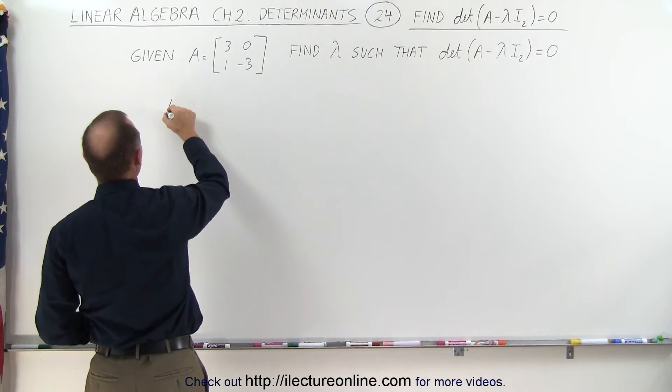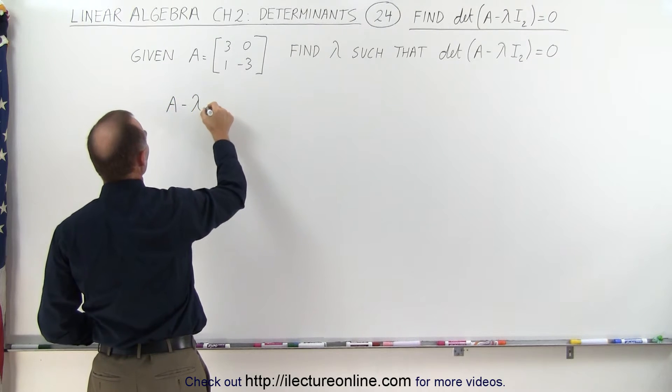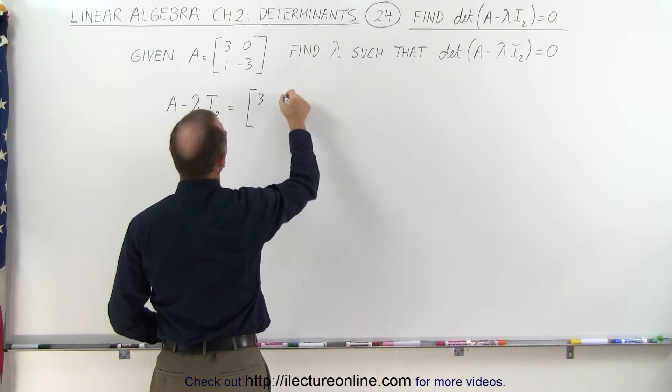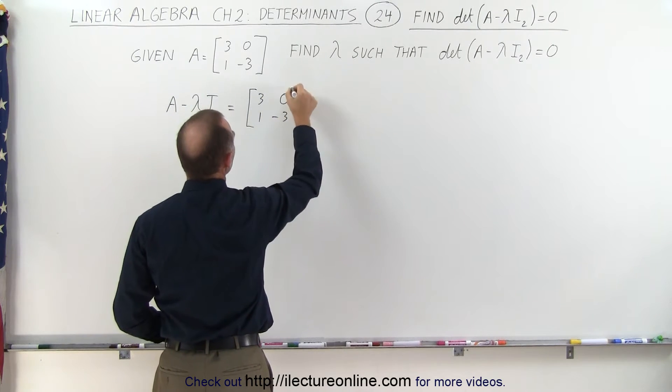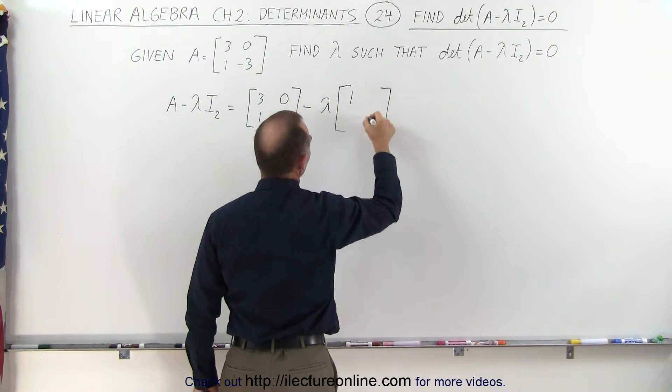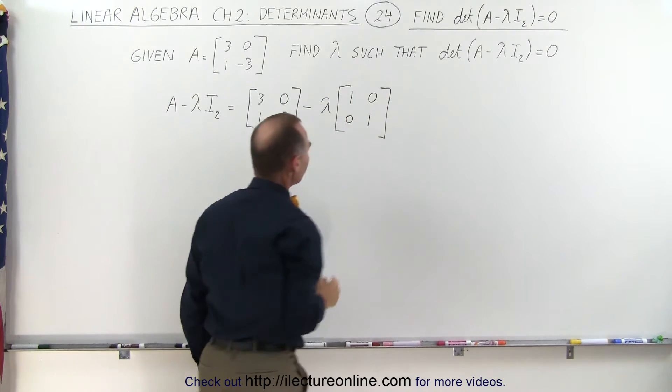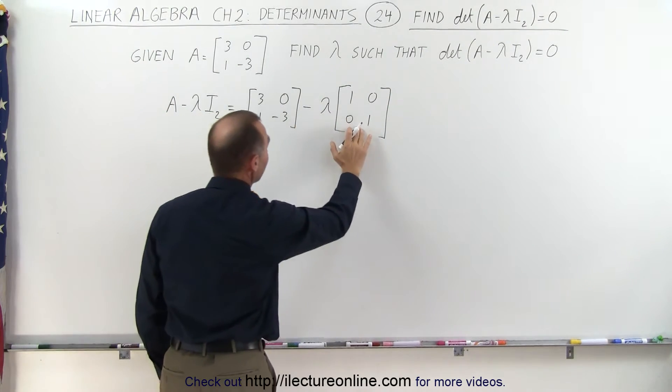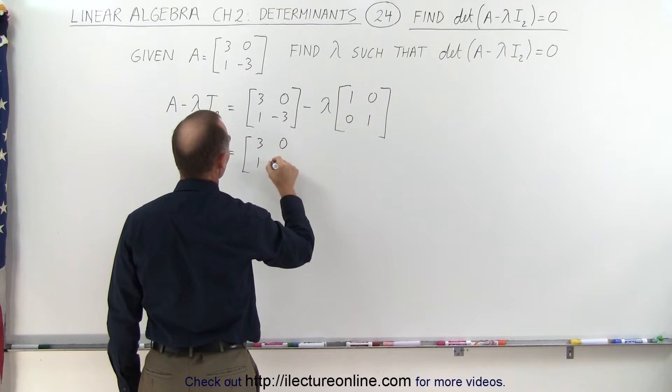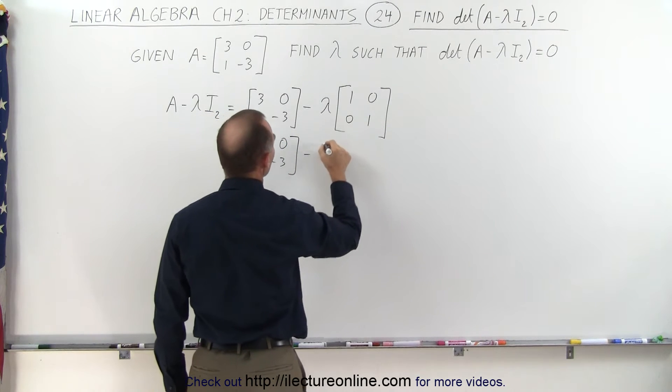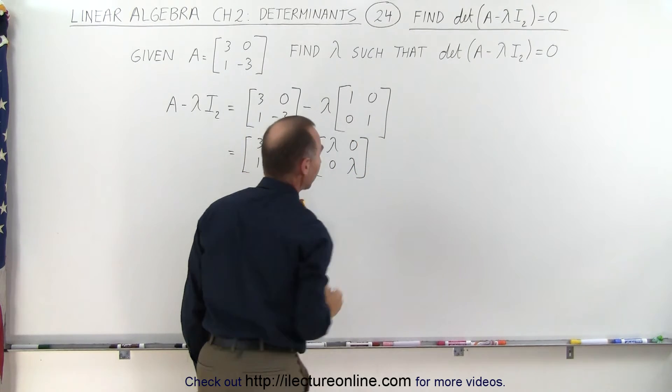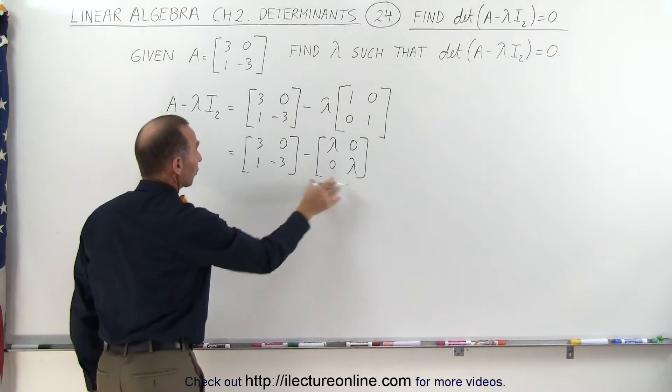Take the matrix A, so A minus the constant times the identity matrix is equal to three zero one minus three, and we subtract from that a constant times the two by two identity matrix which looks like this. Now when we multiply this constant in here we get the following: this is equal to three zero one minus three, and then minus the matrix lambda lambda down the diagonal and zeros here. Now we can go ahead and subtract this matrix from this matrix.